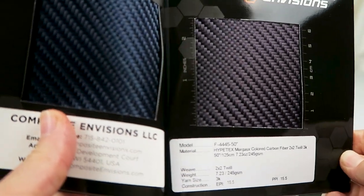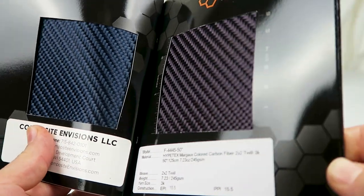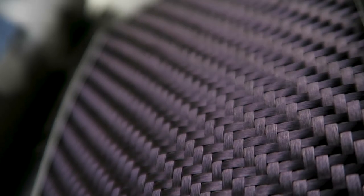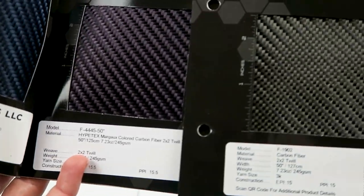The next sample they're calling Margo, and this one is sort of an eggplant purple. Here it is compared to plain carbon fiber.